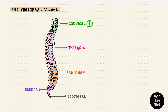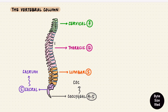Usually there are seven cervical vertebrae, 12 thoracic, and five lumbar. The five sacral vertebrae fuse during the course of life, later in life, to form a single sacrum. And four to five coccygeal vertebrae also fuse, forming the coccyx.